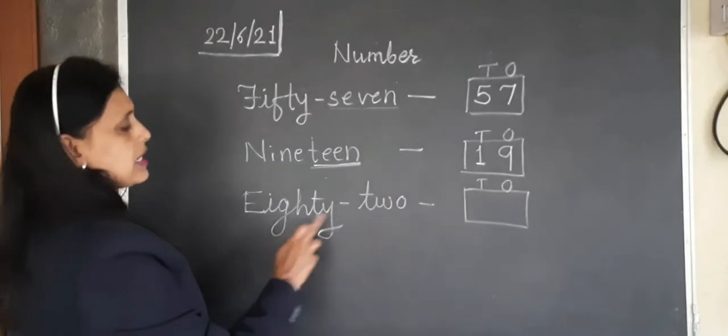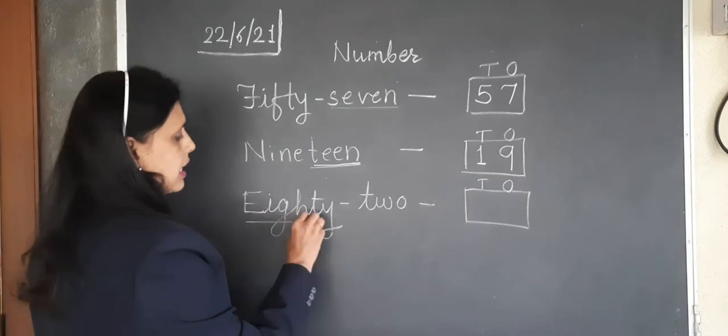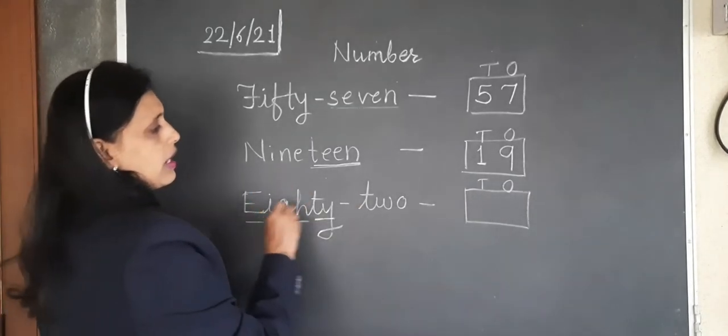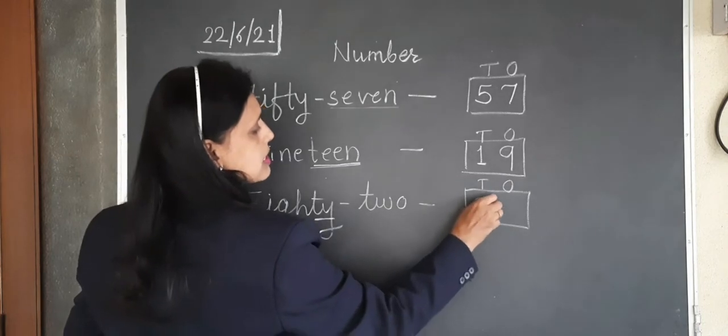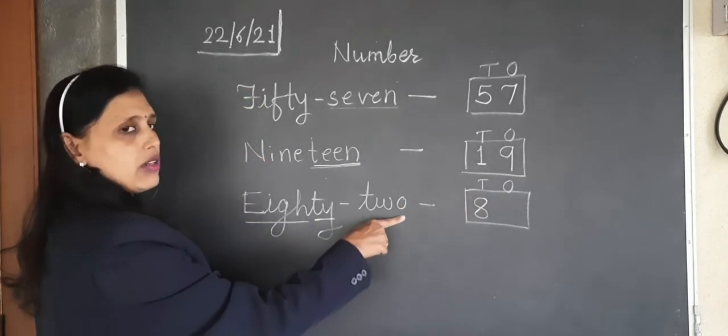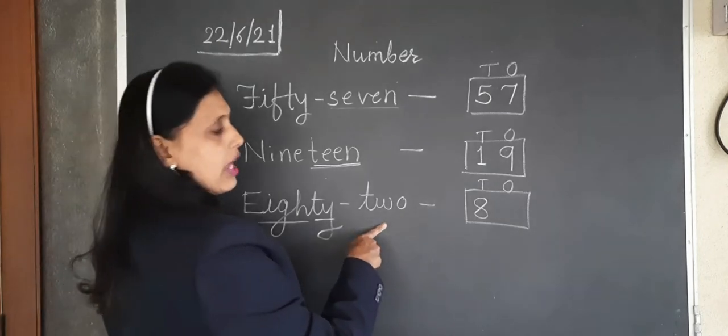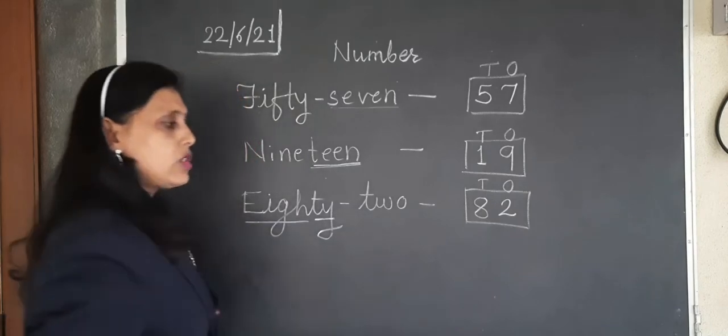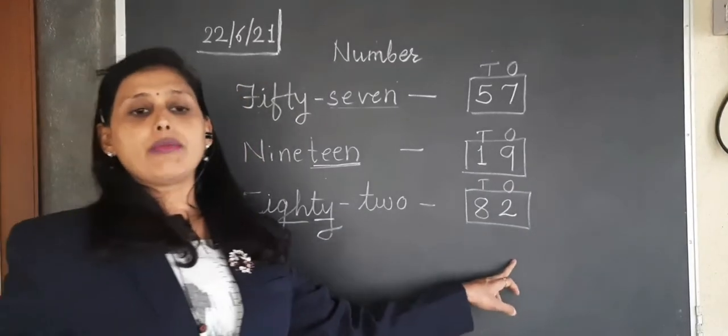Next one is eighty-two. 8 is attached with T-Y, which means tens column. 8 we have to write under the tens column. And 2 is a single number, one word only, so we have to write it under the ones column. So this is our 82 number.